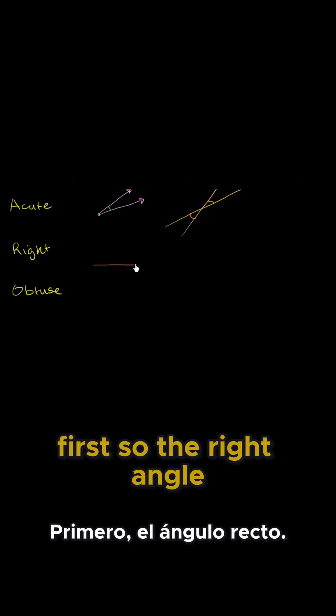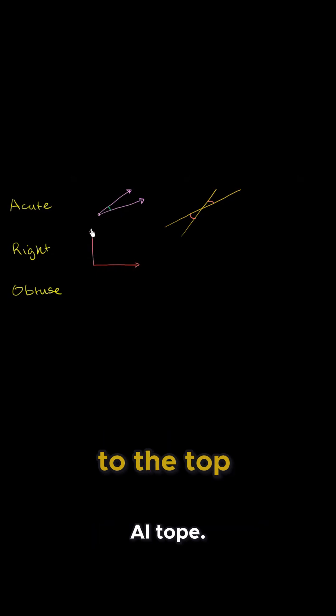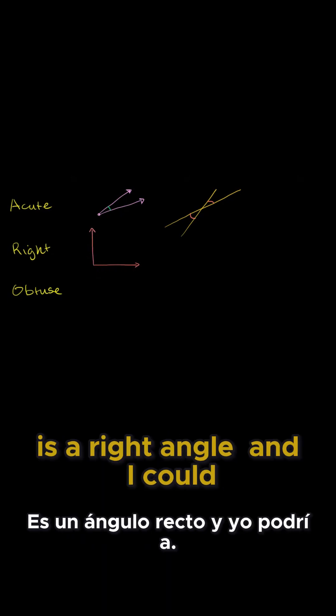So let me draw it with the rays first. So the right angle, this one's going from the left to the right, then the other ray is going from the bottom to the top. This angle right over here is a right angle.